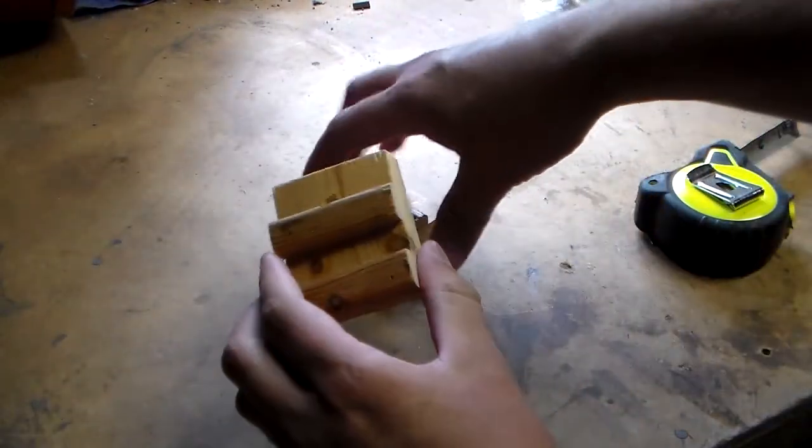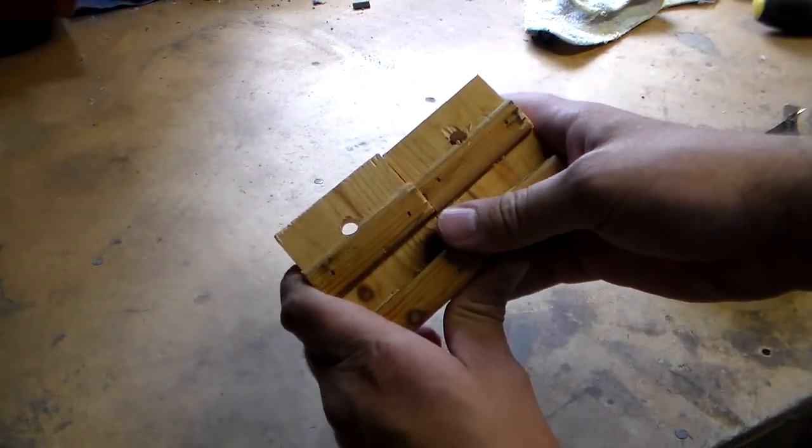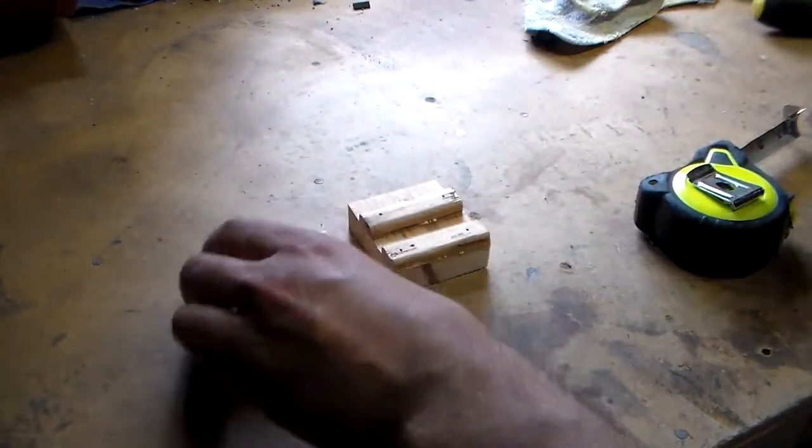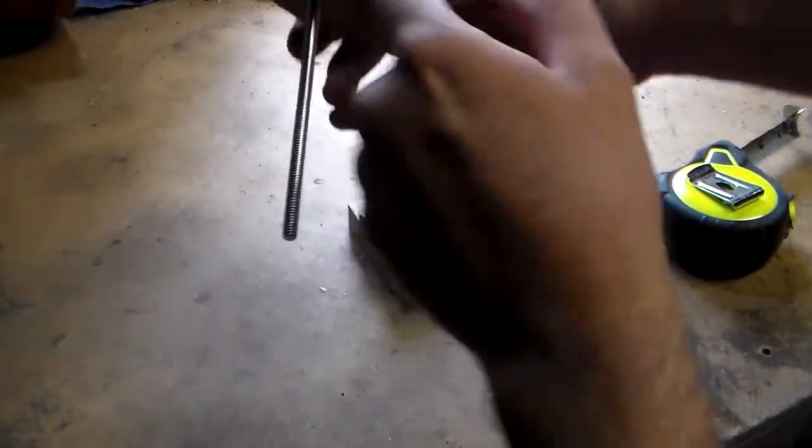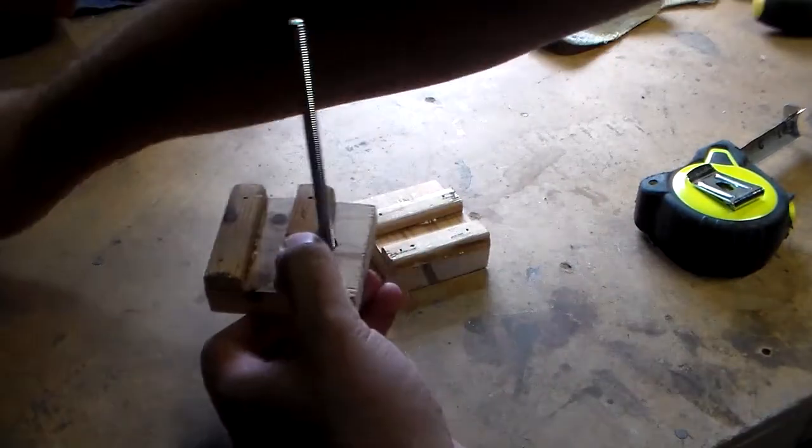Alright, now that I've got both holes drilled, and roughly in the same place, it's time for assembly. We're going to take our top piece here, and it's going to go grooved down on our carriage bolt, just like so.